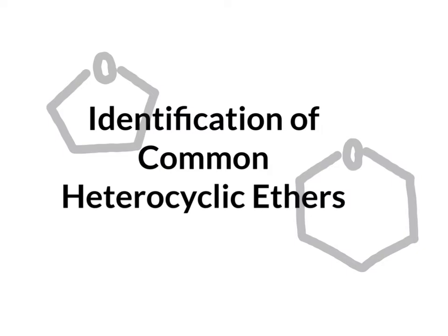Now we're going to look at identifying common heterocyclic ethers. A heterocycle is a molecule that contains any atom other than carbons in the ring. Examples include a five-membered ring with an oxygen or a six-membered ring with an oxygen—both are heterocyclic ethers. So how do we go about naming those?